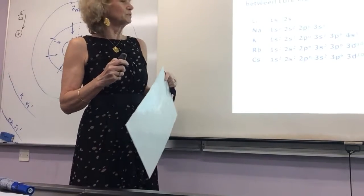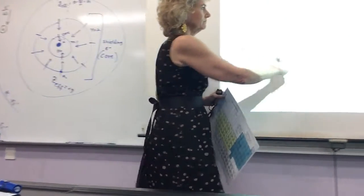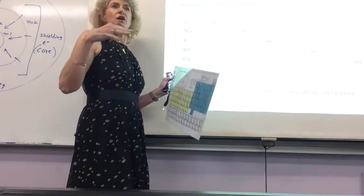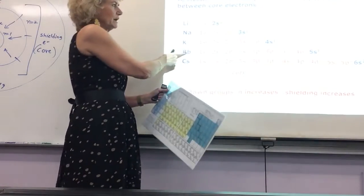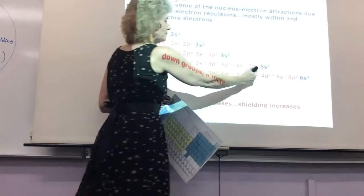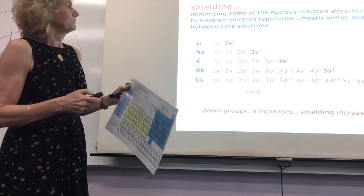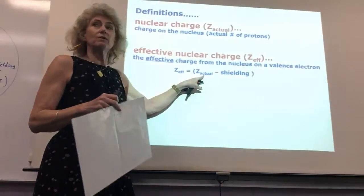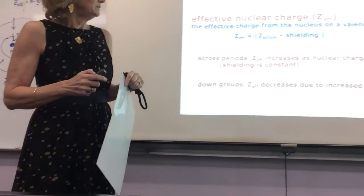How do you calculate Z effective? Take what the actual proton count is — the atomic number Z — and subtract the core electrons, the shielders. Here's a better picture: some nucleus with lots of positive charges, the green stuff is the core electrons. These core electrons cancel out some of the positive charge. You just pick one electron in the valence — what forces are acting on it? It's being attracted very weakly because all the core electrons are canceling out some of the nuclear charge, almost one for one.